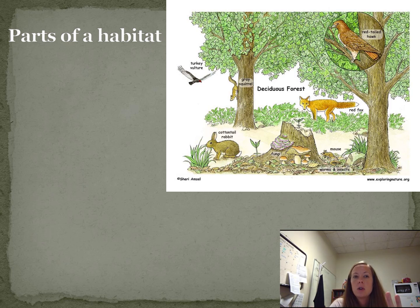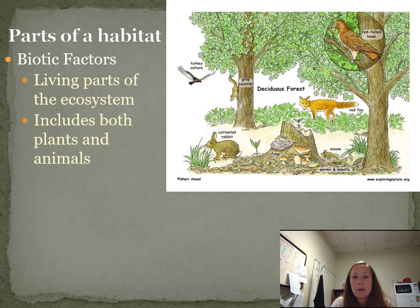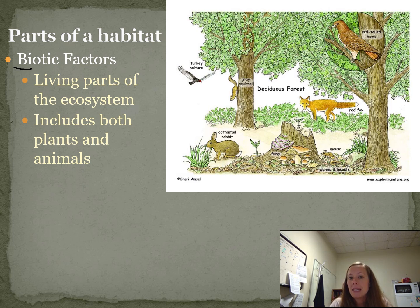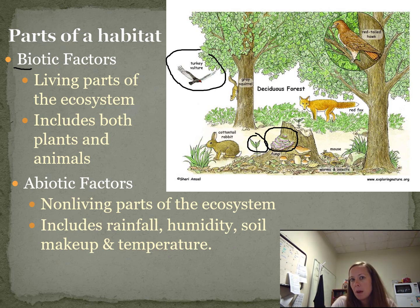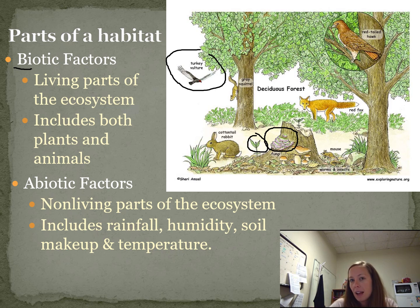You can break your habitat into specific parts. You have your biotic factors — when you see the word biotic, think of living, like biology. These are the living parts of the environment: plants and animals. In that picture we have fungus, plants, and animals — those are all biotic factors. Then you have abiotic factors, the non-living parts: temperature, humidity, soil makeup, what chemicals are in the soil, how nutrient-rich the soil is, which also affects what can grow there.